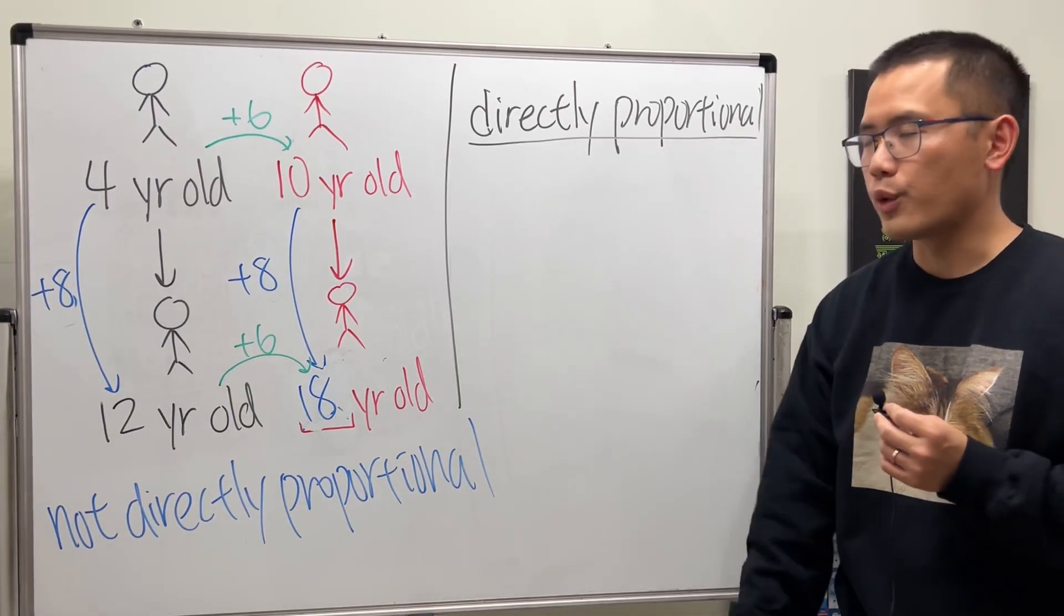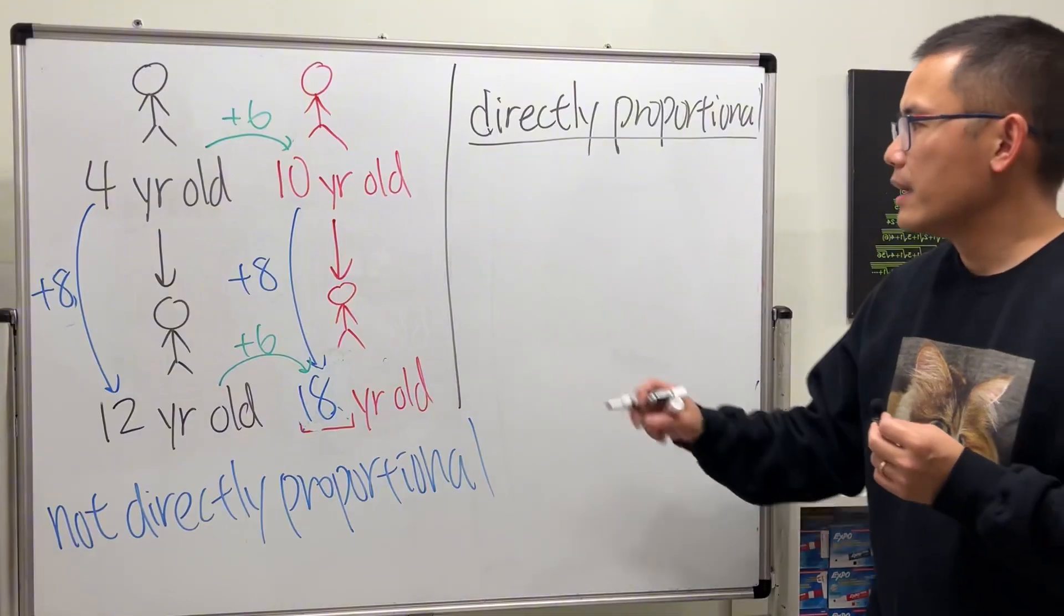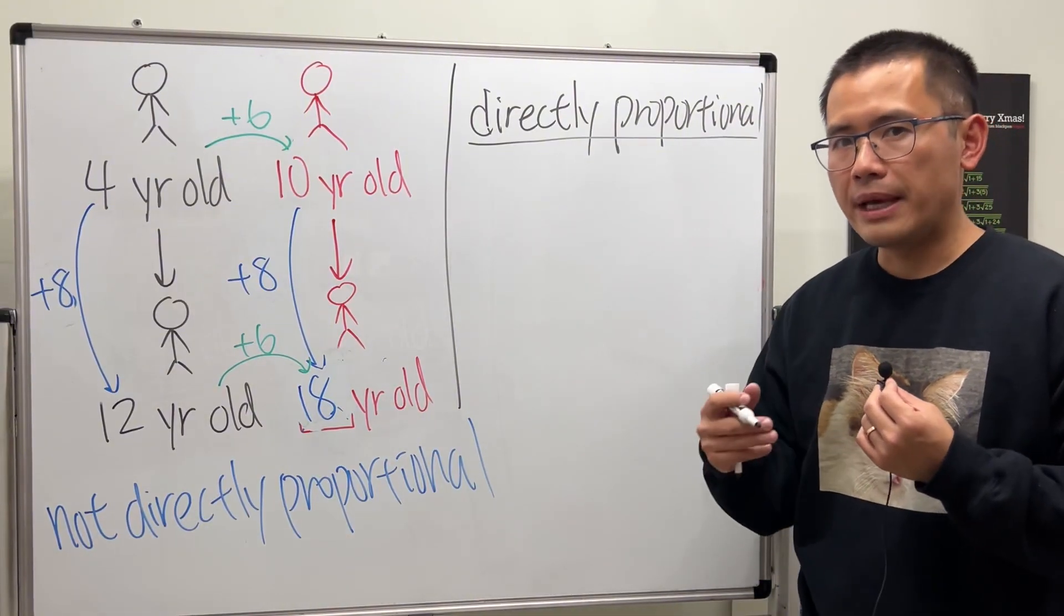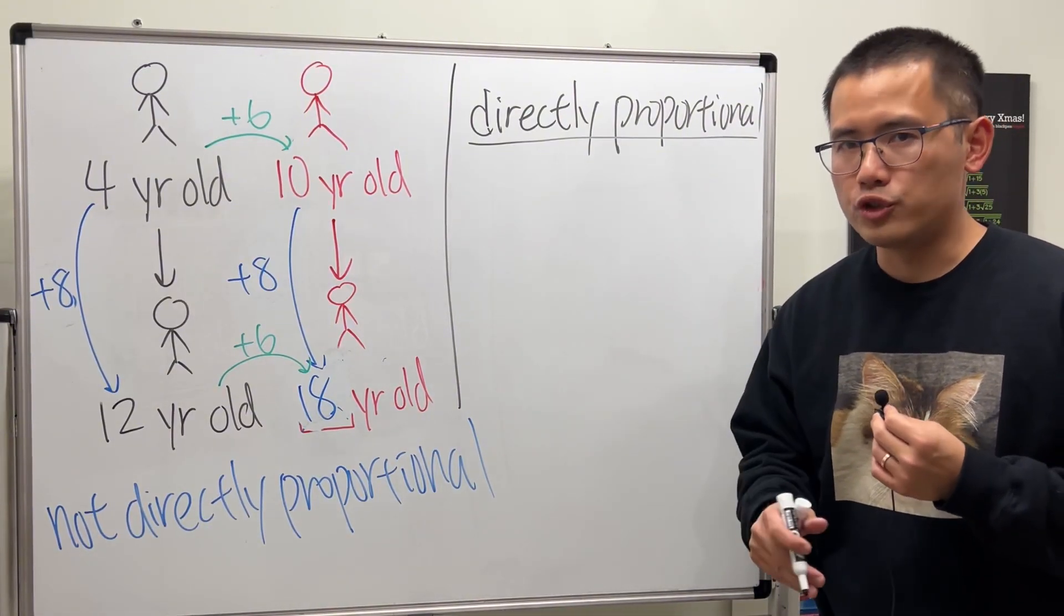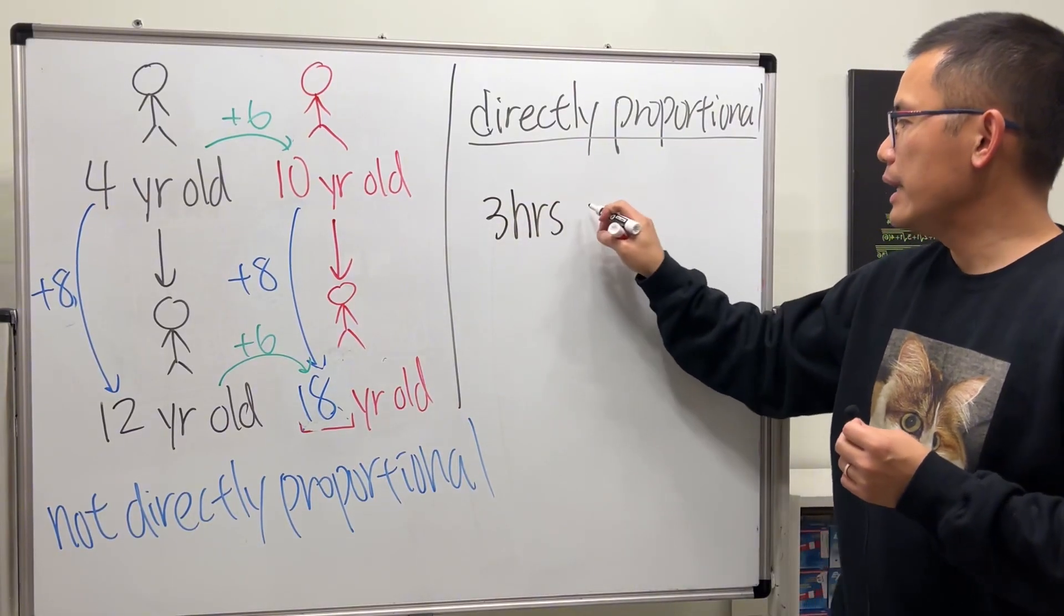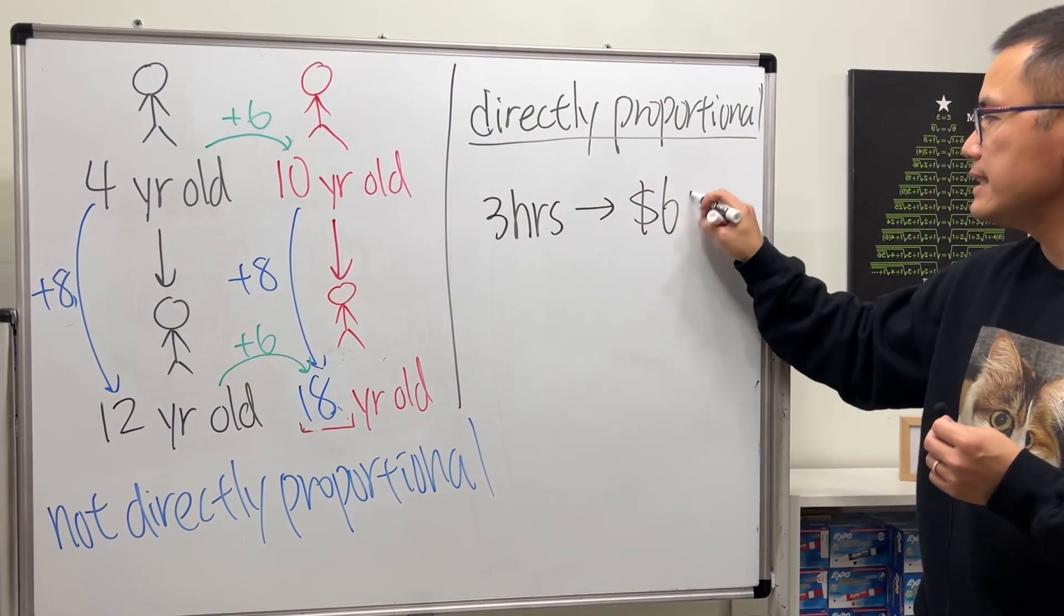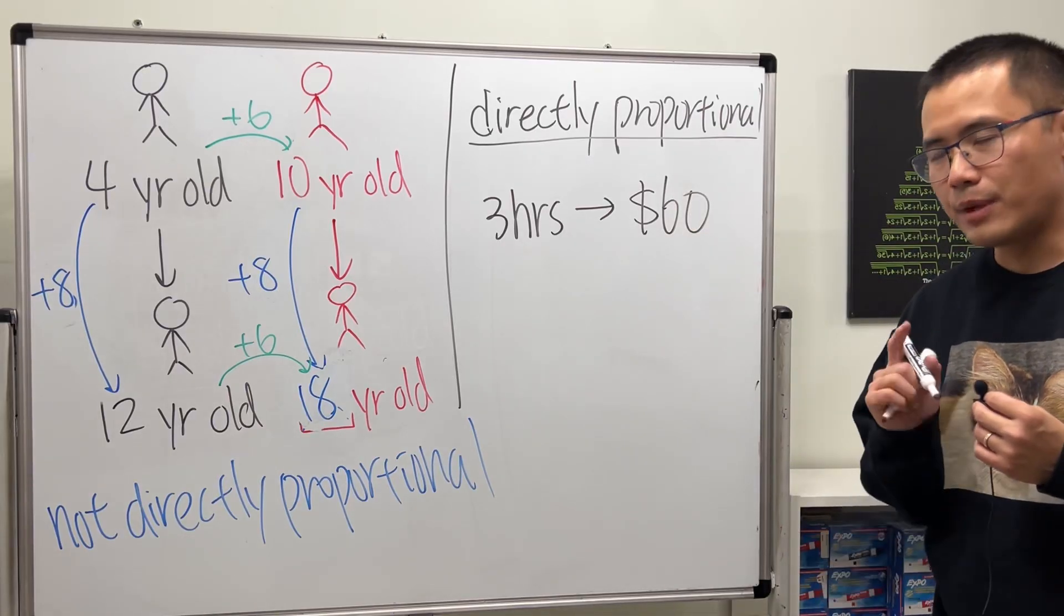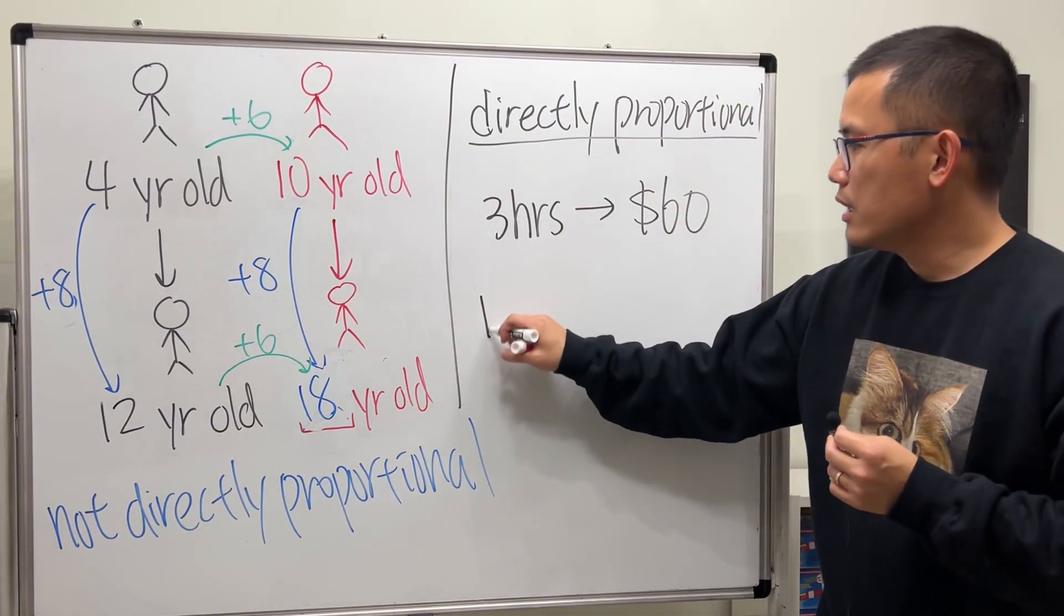And this right here is going to be very useful when you have to solve some situation questions. So here's the deal: suppose you have a job that pays you hourly, it's the same wage per hour, and let's say you work for three hours and you get paid a total of sixty dollars.